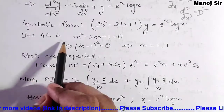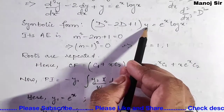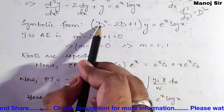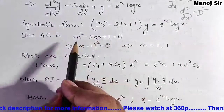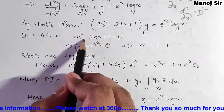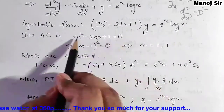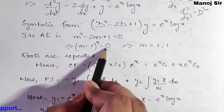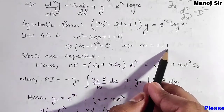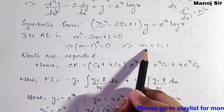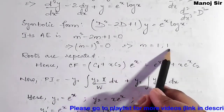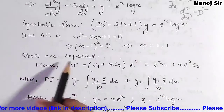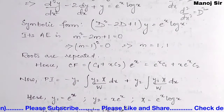Now we find the auxiliary equation by equating the coefficient of y to zero, replacing D with m. So m² - 2m + 1 = 0, which gives (m - 1)² = 0, so m = 1, 1. The roots are repeated.